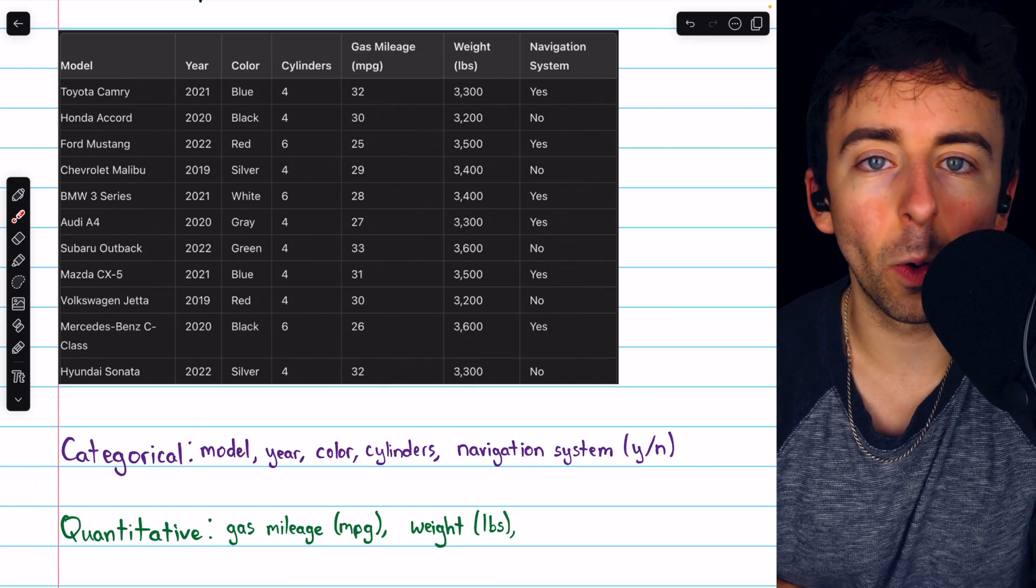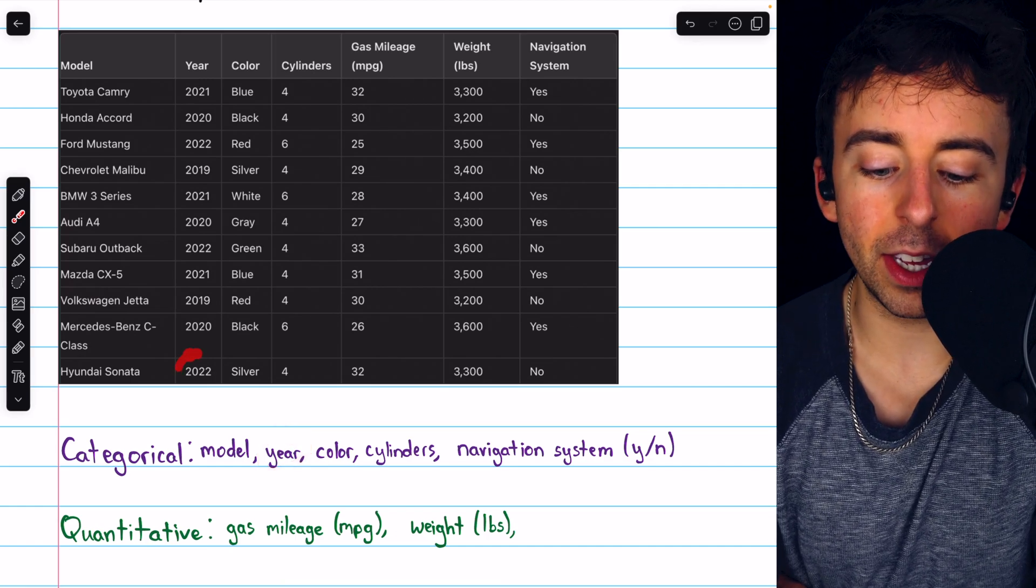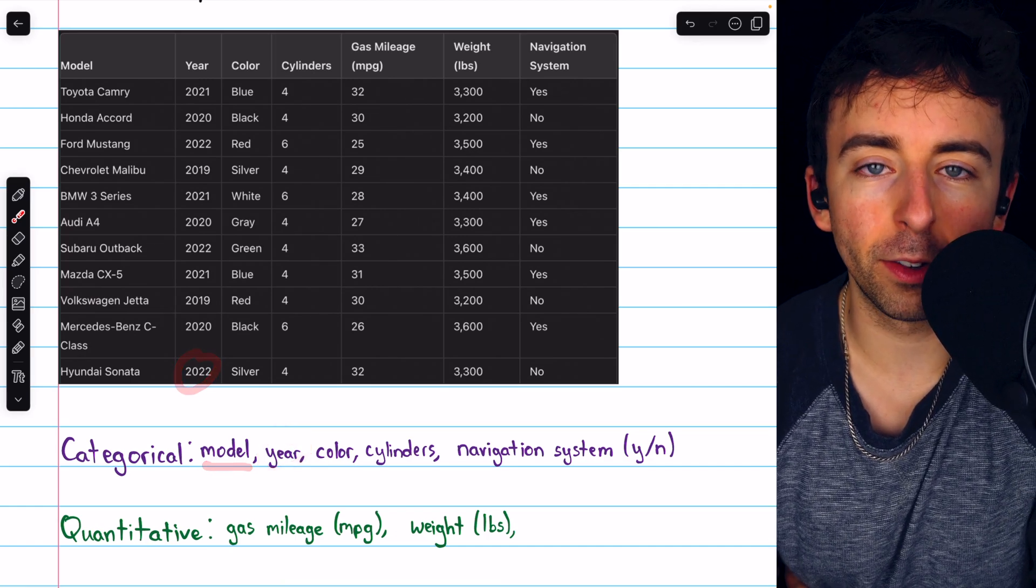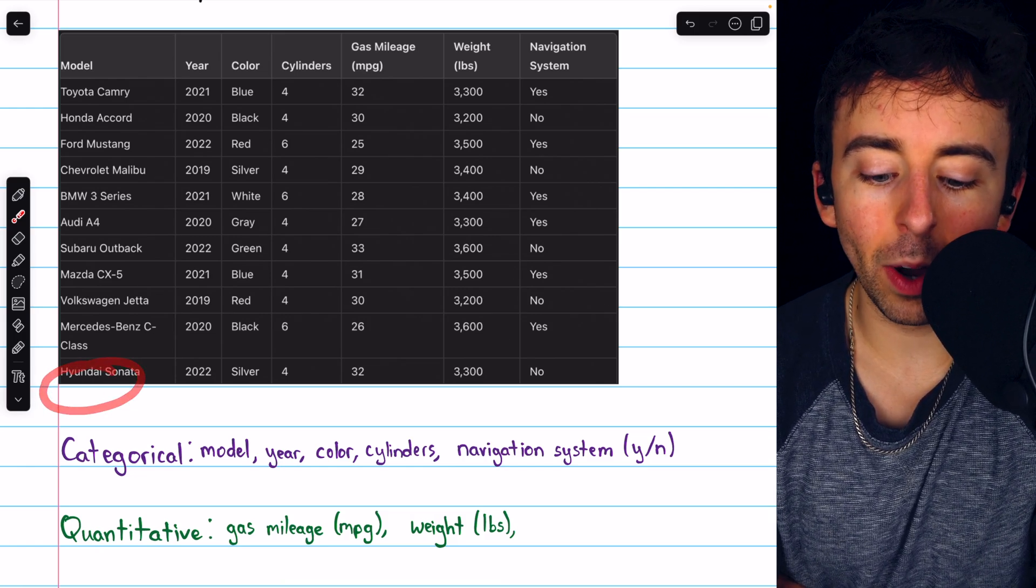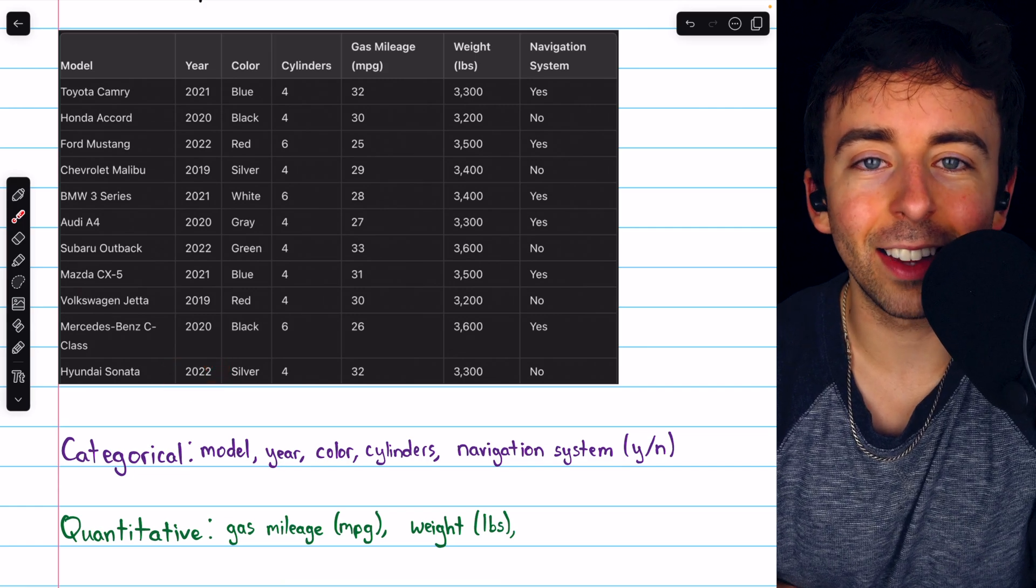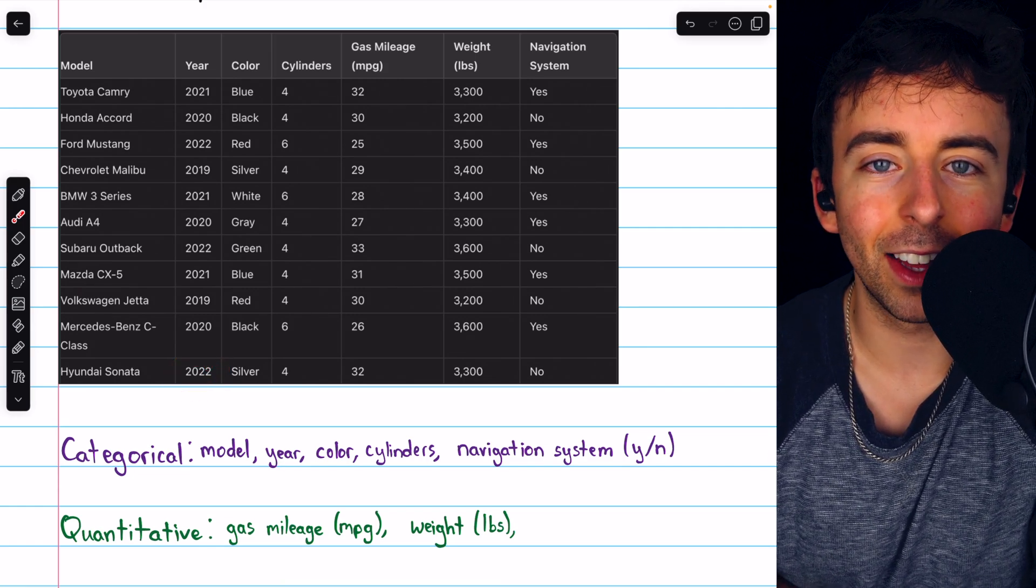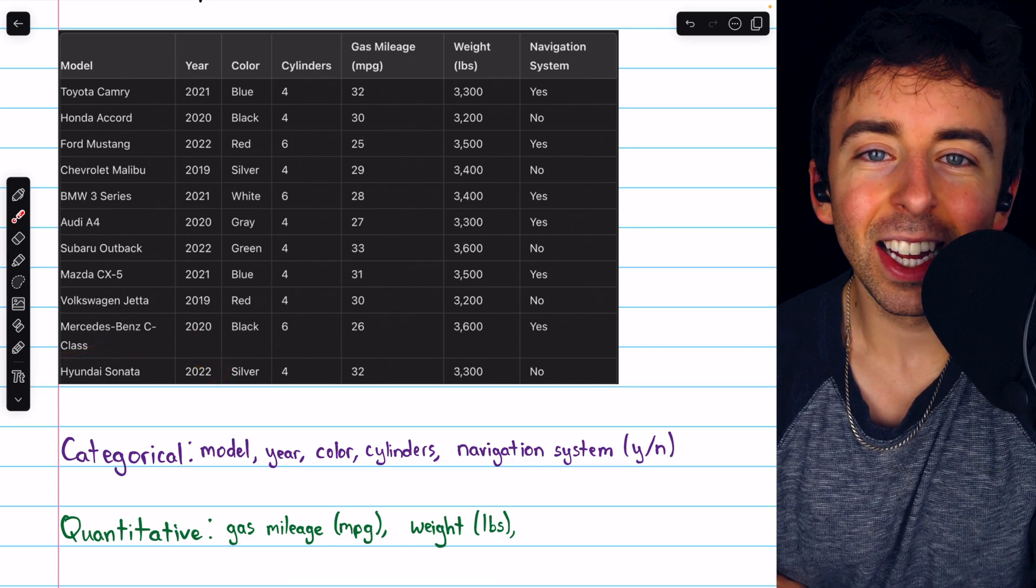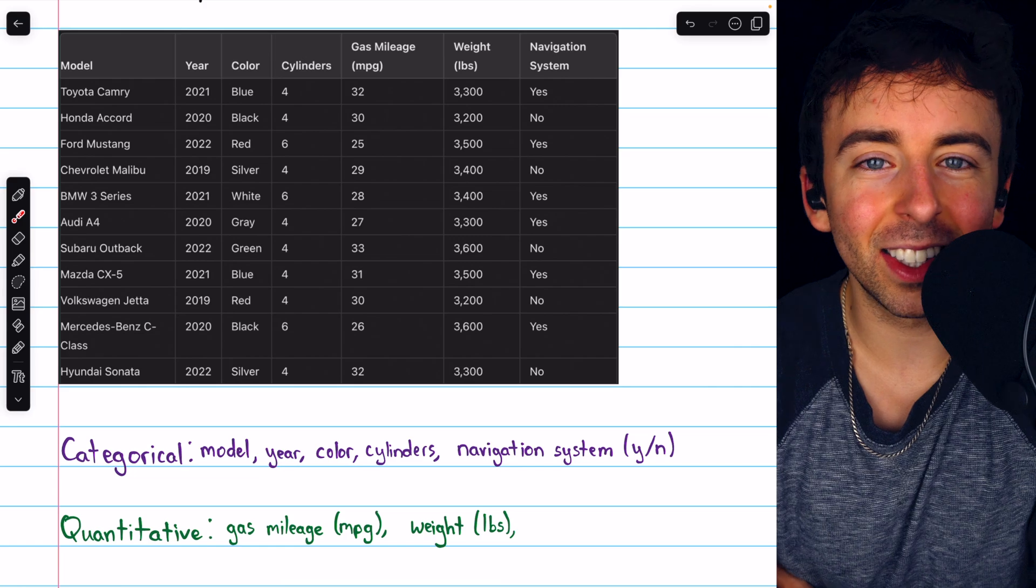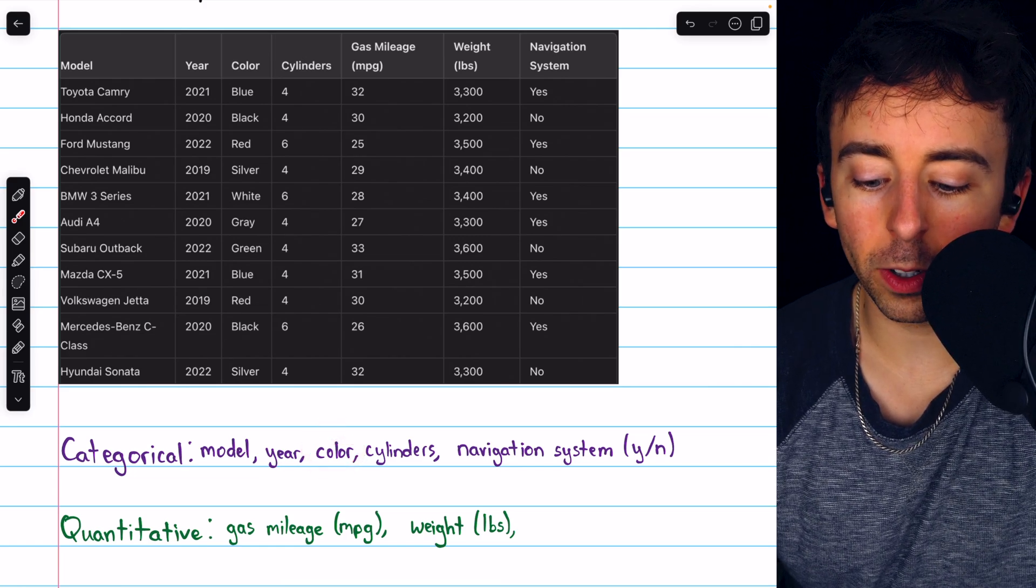You probably got most of these right, but you may disagree with me on a few. Certainly model is categorical. Year is also categorical. You can kind of think of the year as an extension of the car's model. It's like being more specific. A Hyundai Sonata, well, specifically, it's a 2022 Hyundai Sonata. Additionally, the year isn't really quantifying anything because just because it's a 2022 Hyundai Sonata, that is describing the model. It didn't have to be manufactured in 2022. Color is obviously categorical.